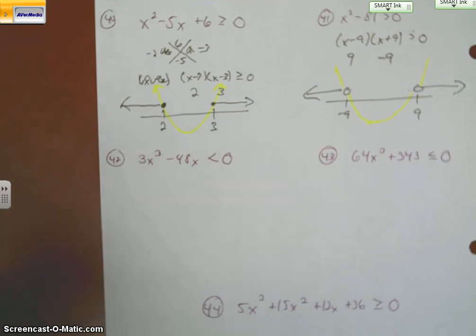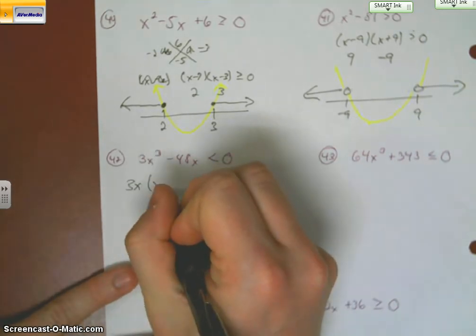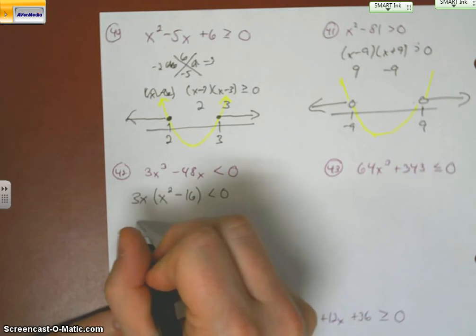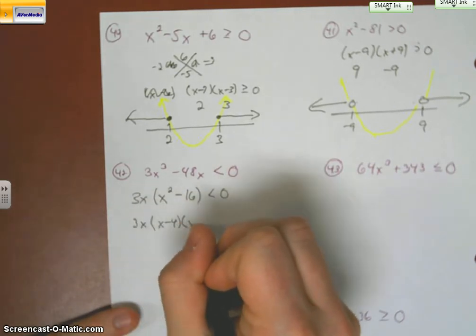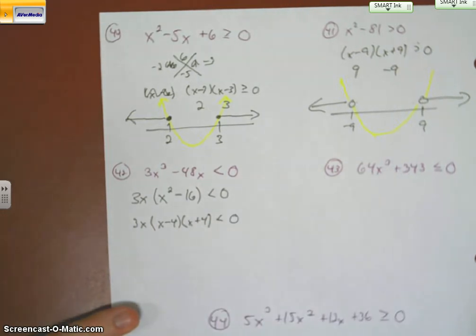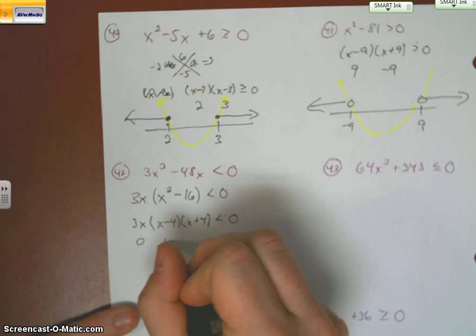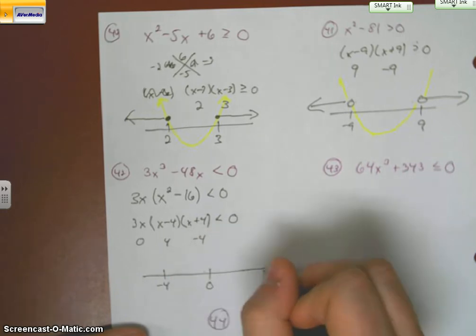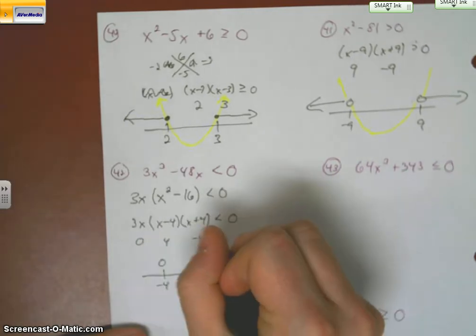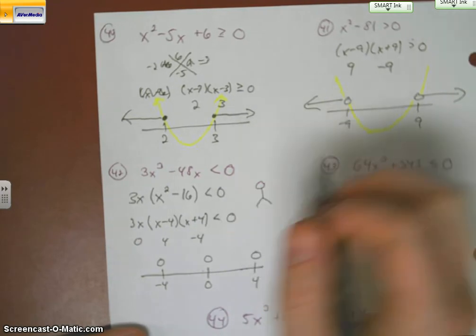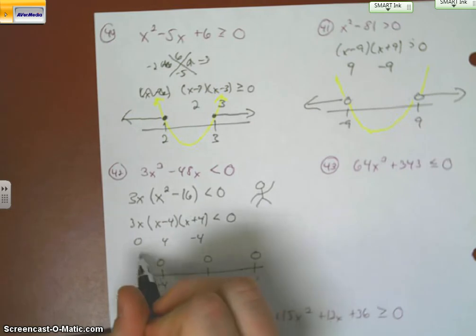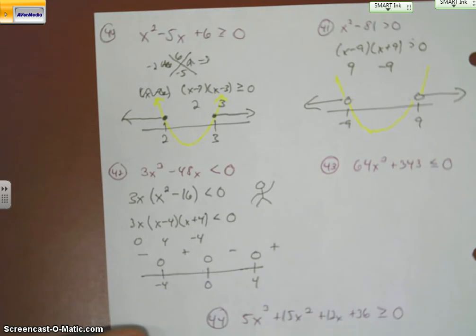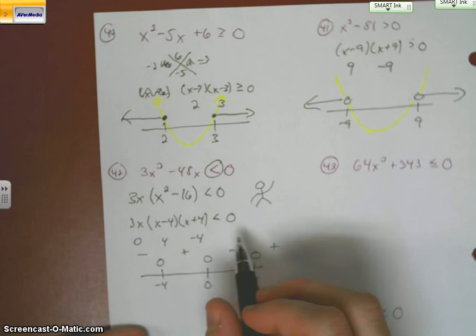Next one, let's go ahead and take out a GCF of 3x. So we end up with x squared minus 16. Then we end up with x minus 4, x plus 4. So we have answers of 0, 4, and negative 4. We're using open circles. Let's remember the end behavior guy. For an odd, it starts negative. And then it alternates back and forth. We are looking for less than. So we're looking for the negatives.